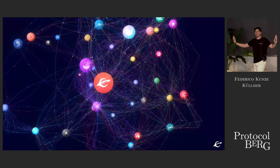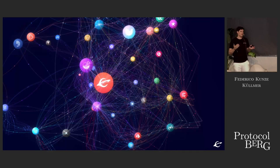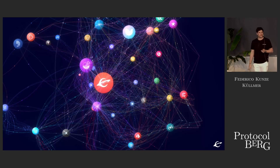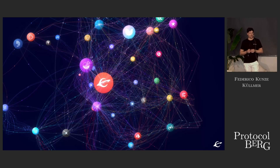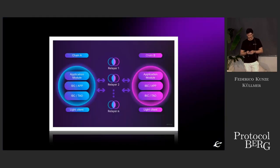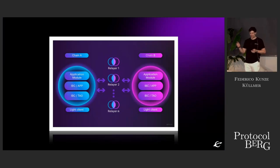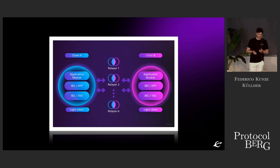But there's no problem — Cosmos IBC is here. We are providing a better interoperability solution than any of the other EVM-compatible bridges, and that's why it's the most popular standard today. IBC has different layers: the transport, authentication, and ordering layer — the TAO — and the application layer on which you can build applications. But IBC also has its own complexities.